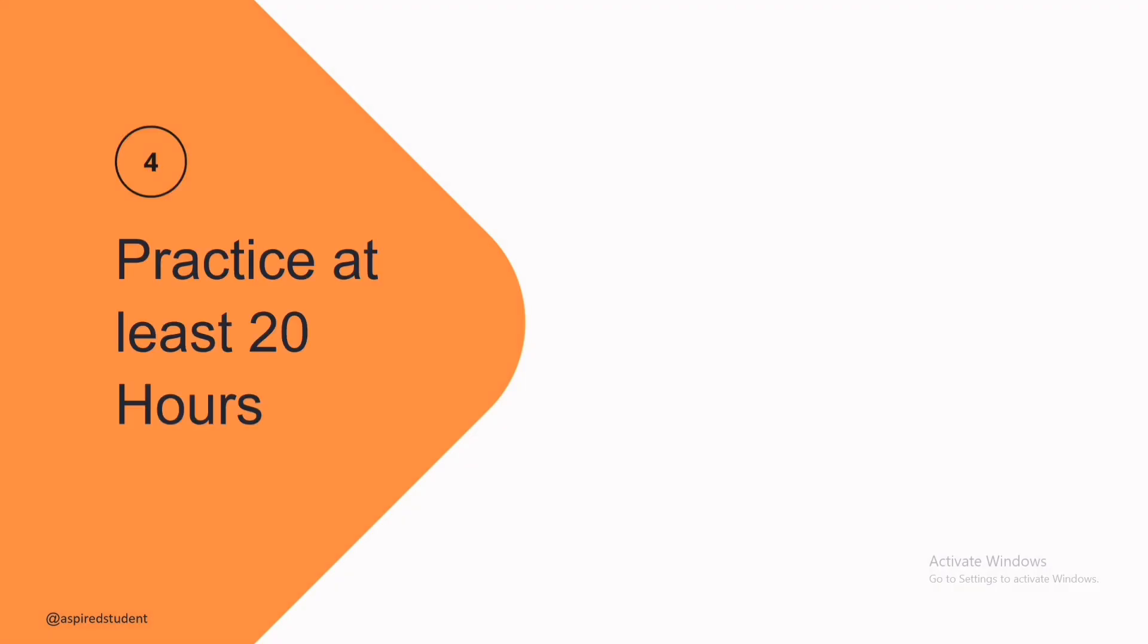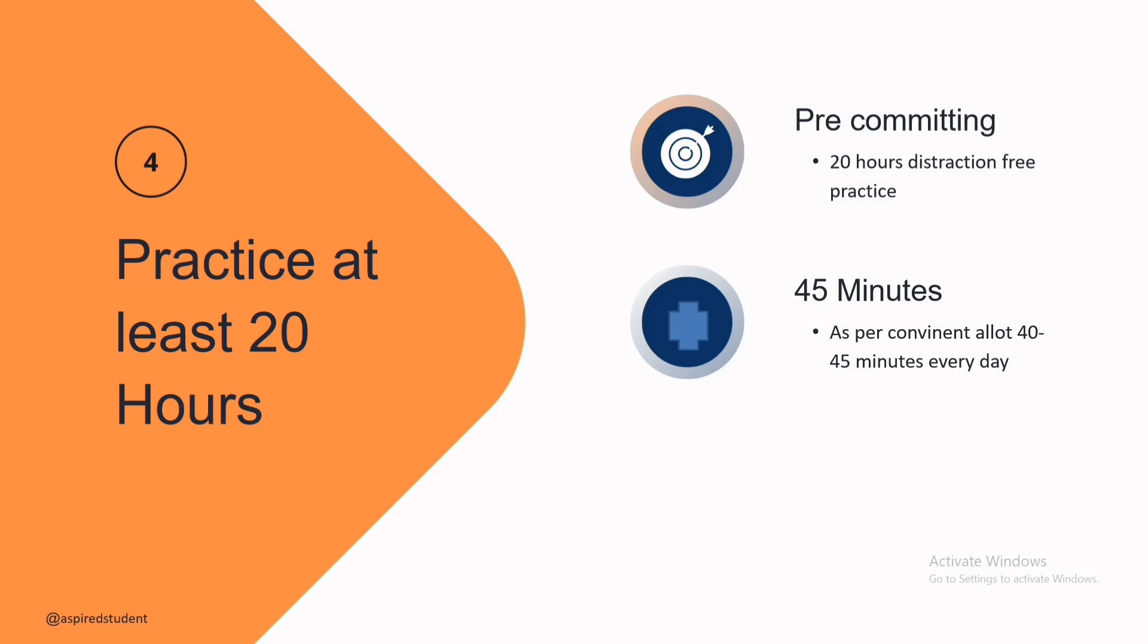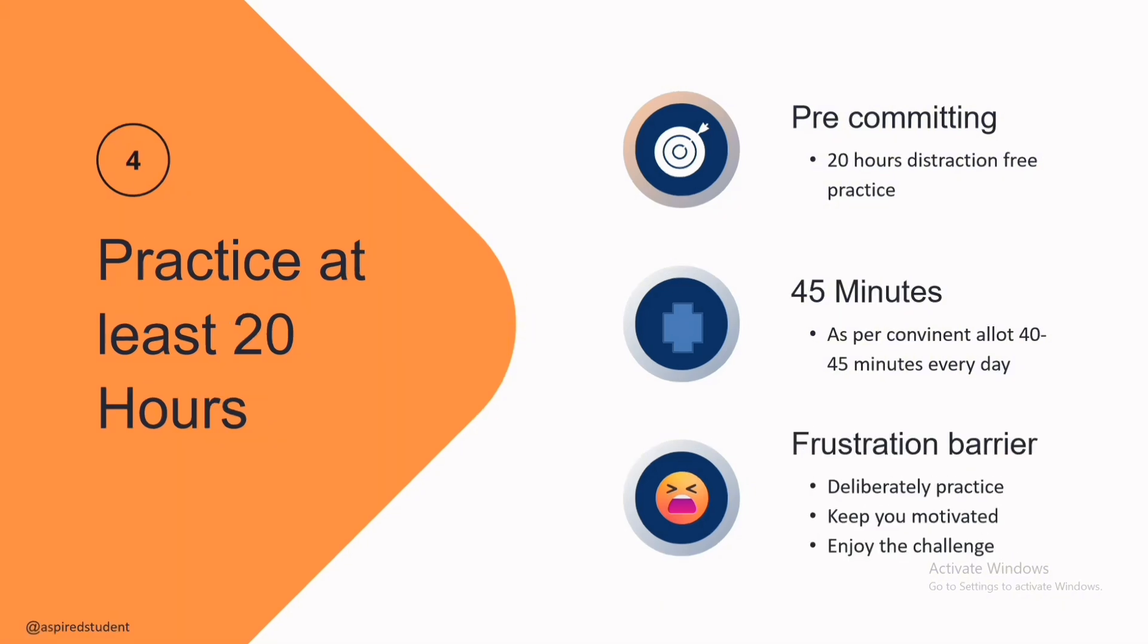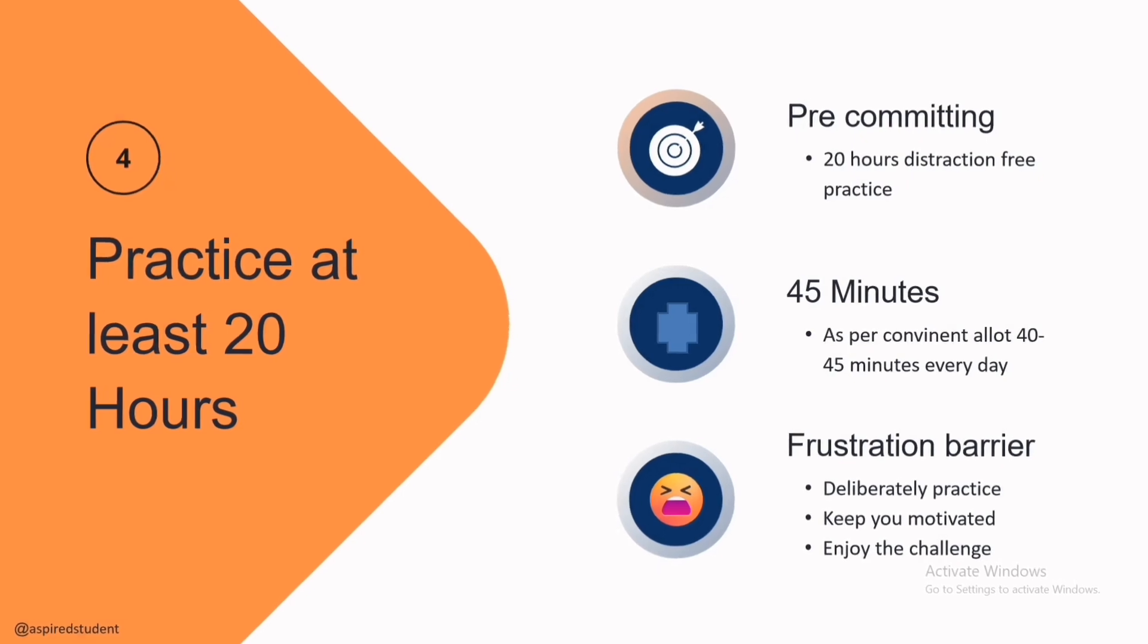Practice at least for 20 hours. This is the last and the some wisely parts and the conclusion of this video. We have to practice seriously and effectively for 20 hours. For this, we have to pre-commit for 20 hours. We do nothing for only 40 to 45 minutes for a day for next 30 days. And, this is the most crucial frustration barrier. By practicing a small and a small day by day, we become bored and it is a frustration zone. We have to keep the momentum and enjoy the process.